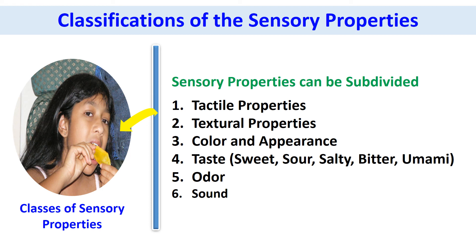Tastes are sweet, sour, salty, bitter, and umami. However, well-defined classifications of odors are very difficult. Acoustic properties is the sound created when you consume foods, such as biting, crushing, mixing, and even when we drink.